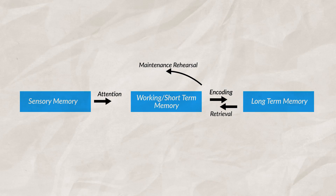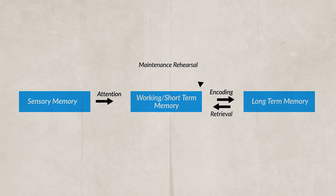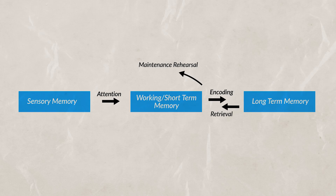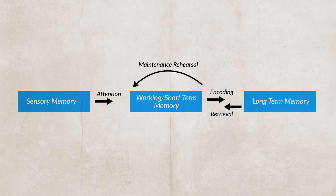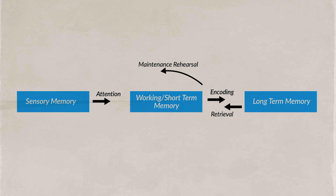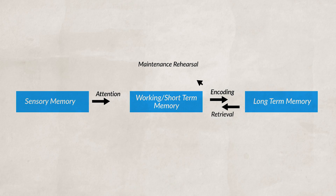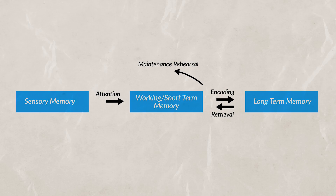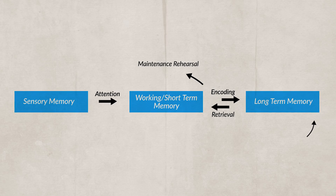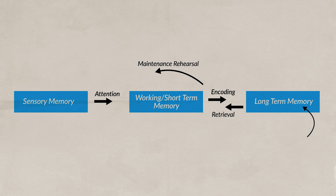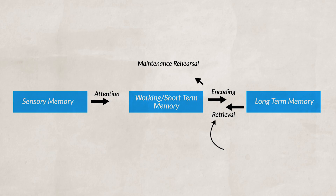Starting with the information processing model again, we can see how long-term memories are created and how sometimes we can struggle to remember certain memories or forget memories entirely. This normally happens in one of three places: the first being the encoding process, the second being our long-term memory itself, and the last being with the retrieval process.